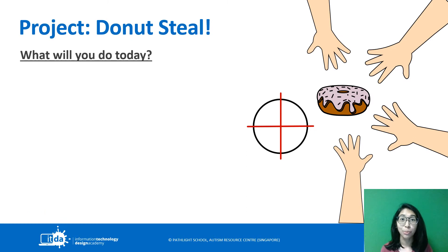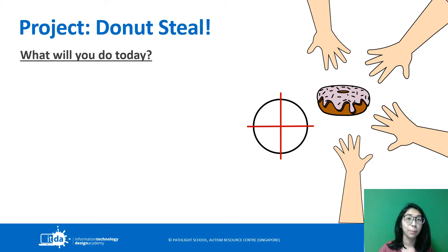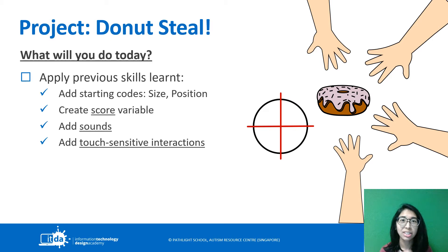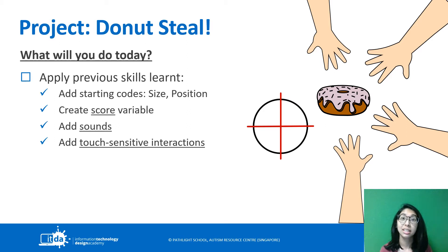Our Donut Steel project looks a bit like this. We will have a donut sprite with many hand sprites as well as a target sprite. You're going to apply some of the previous skills you learned — how to add starting codes, how to set your size, how to set your position for your sprites. All these you already know, so we're going to practice again. We're also going to create a score variable for your game.